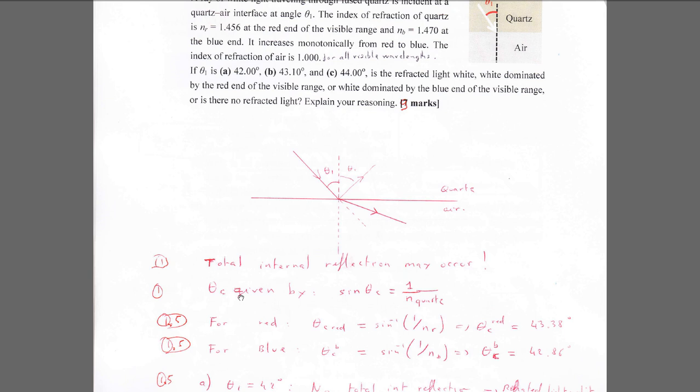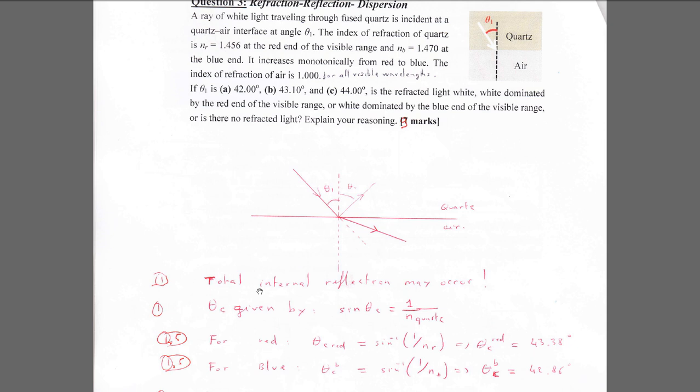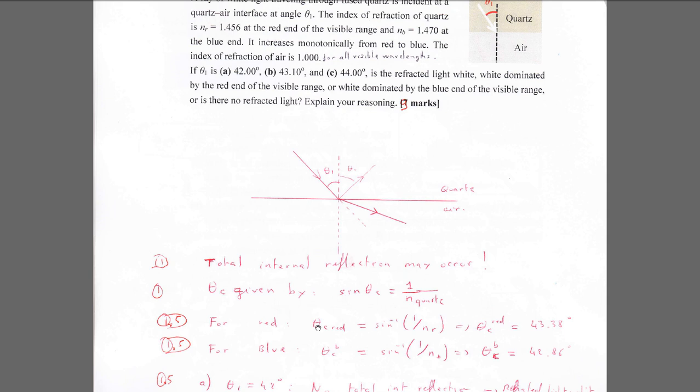We have to find the critical angle first. The critical angle is given by sine of theta_c equals n_air divided by n_quartz, since n_air is 1. In general, the index of refraction increases from red to blue, so we need to find the critical angle for the two extremes: red and blue.